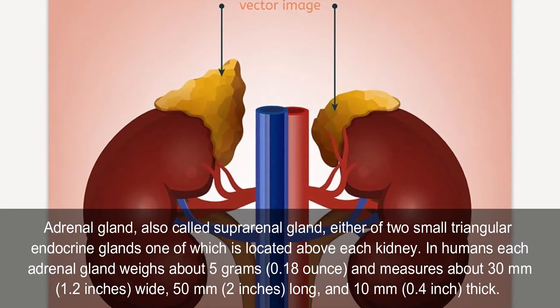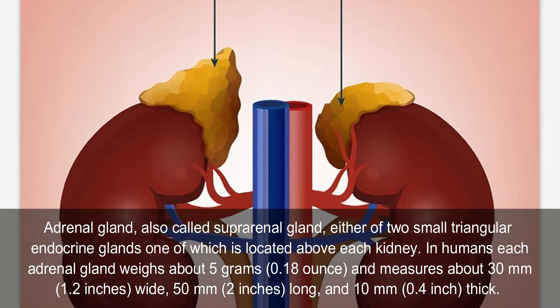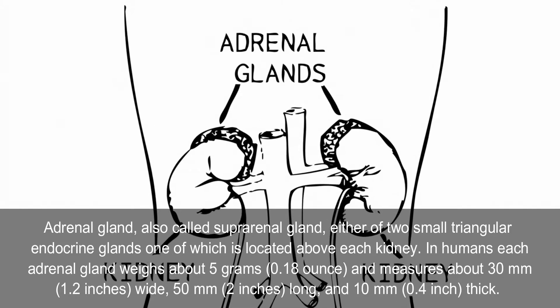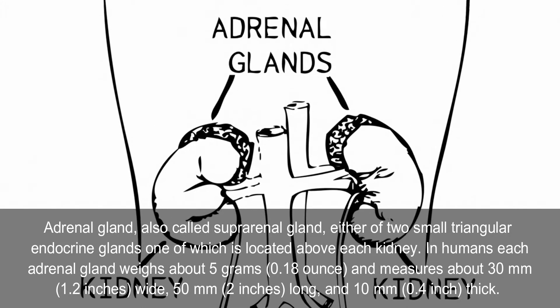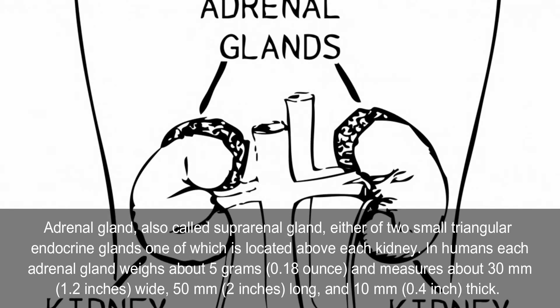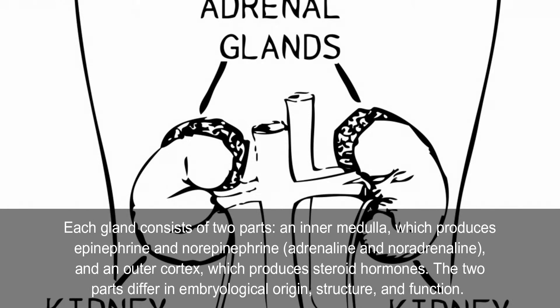In humans, each adrenal gland weighs about 5 grams (0.18 oz) and measures about 30 mm (1.2 inches) wide, 50 mm (2 inches) long, and 10 mm (0.4 inch) thick.